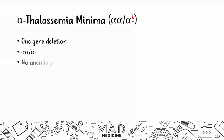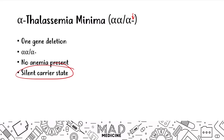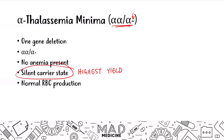In alpha thalassemia minima, you're not really going to have any anemia present, but you are going to have a silent carrier state. That is probably the highest yield thing to remember — it is a single gene deletion, and there is going to be normal red blood cell production. These patients are going to be asymptomatic and will present completely normally.